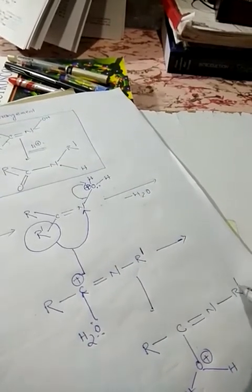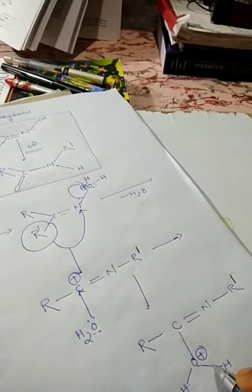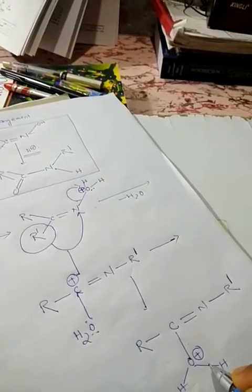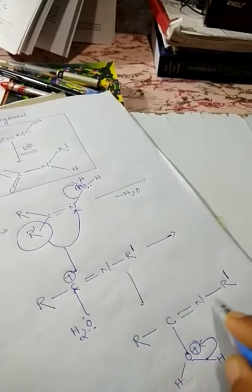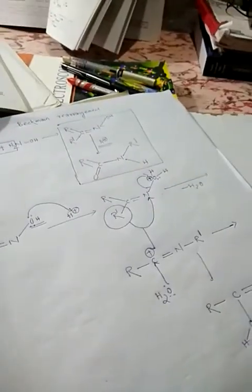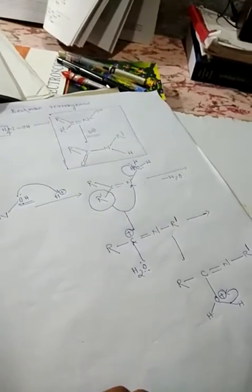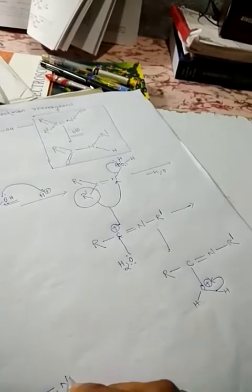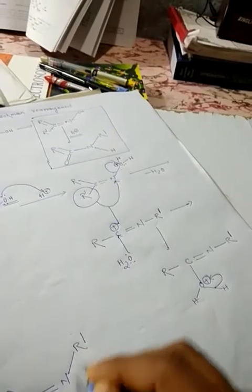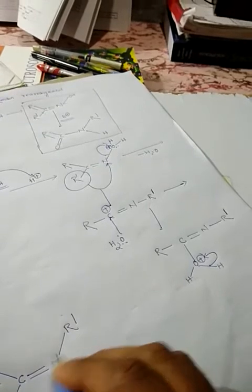Nitrogen and having R'. Now this bond is shifted to this place to minimize this positive charge. Now we have R-C, this is your hydroxyl group, double bond N and R'. This is N-substituted amide.